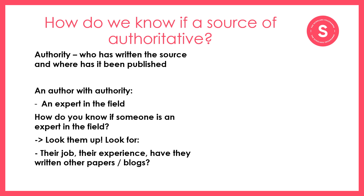So we've said that an author with authority is someone who is an expert in the field. But how do you know if someone is an expert? You can look them up — Google them or use a different search engine and find out what their job is, their experience, and see if they've written other papers or blogs, to build up an idea of how much they know about a particular topic and what their reputation is.